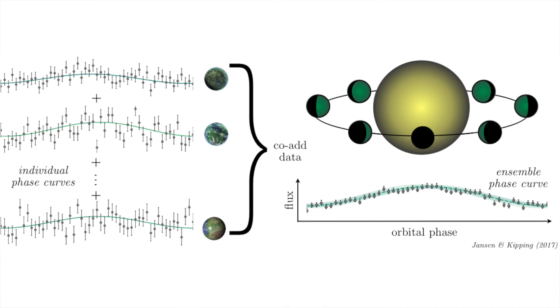This amplitude that we measure will be proportional to the size of the planet and its albedo. This means that really small planets will have really small phase curve amplitudes, so small that they get lost in the noise of the data. But if you take the phase curves of many similarly sized planets and stack them on top of each other, their combined signal can become much stronger than the noise. The more phase curves you stack, the better the signal-to-noise ratio becomes.